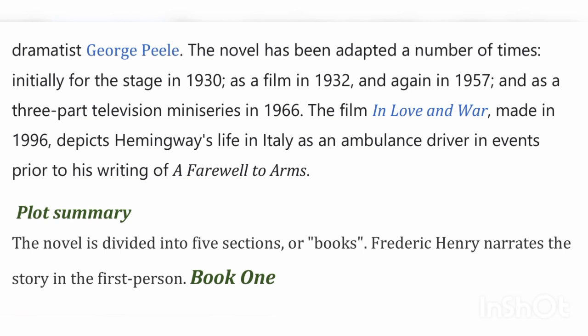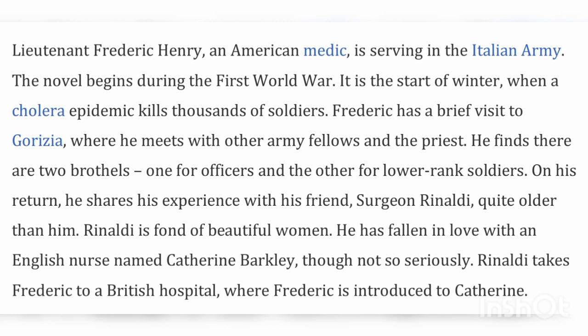The novel is divided into five sections or books. Frederick Henry narrates the story in the first person. In Book One, Lieutenant Frederick Henry, an American medic, is serving in the Italian army. The novel begins during World War I, at the start of winter, when a cholera epidemic kills thousands of soldiers. Frederick makes a brief visit to Gorizia, where he meets other army officers and British soldiers. He finds there are two groups — officers and lower-ranked soldiers.